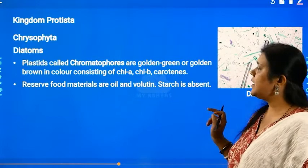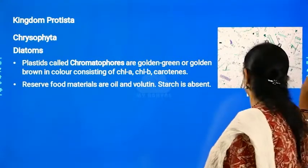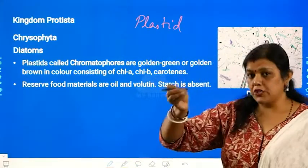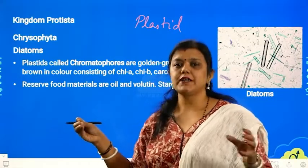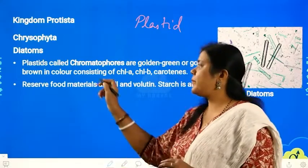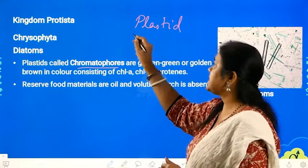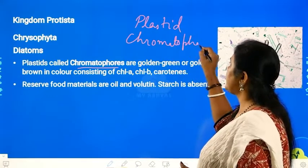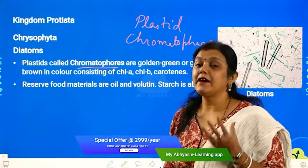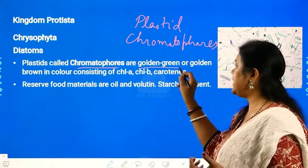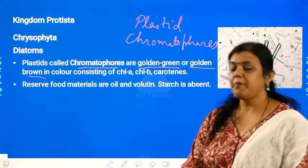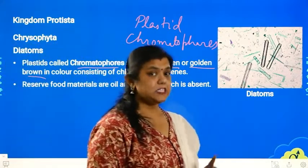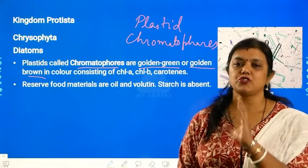Diatoms have a plastid, which is a cell organelle inside the cell that contains some pigments. The plastids of diatoms are called chromatophores. What color do they have? They have golden green or golden brown color. These plastids are responsible for the typical coloration of the diatoms — the plastids' color gives the actual color to the diatoms, which is why they are called brown algae.